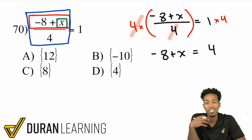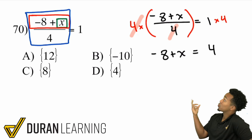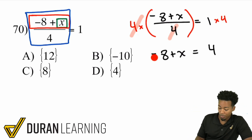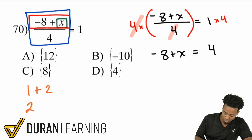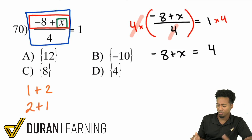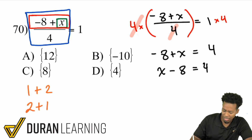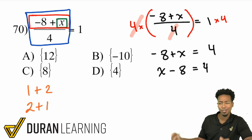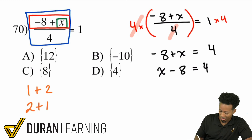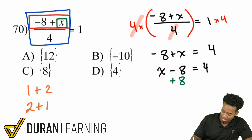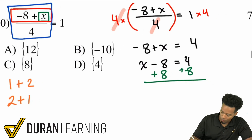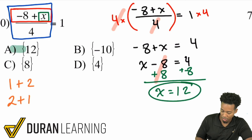A negative 8 means we're just subtracting 8. Remember that negative 8 plus X is the same as X minus 8. So we'll add 8 to both sides. That cancels out, and X equals 4 plus 8, which is 12.